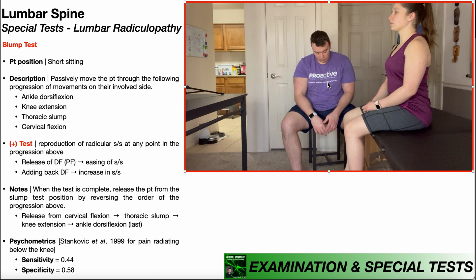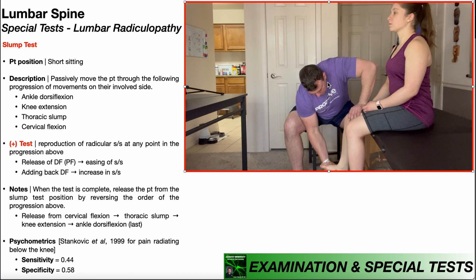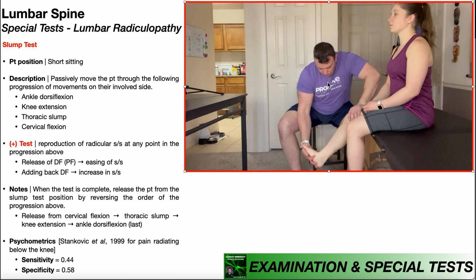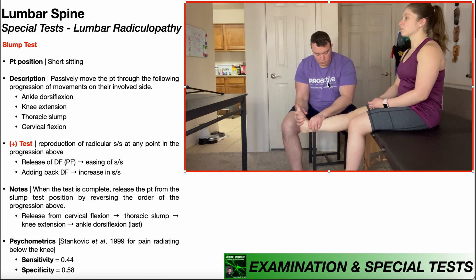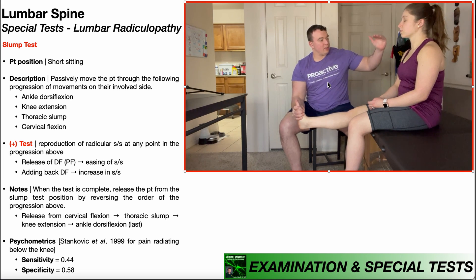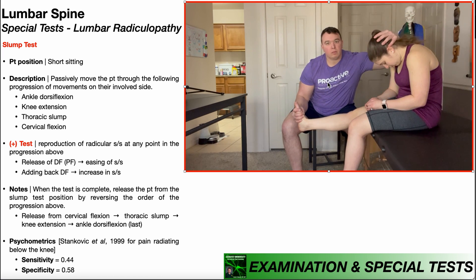I'll take her through those movements. First, I'm going to put her into ankle dorsiflexion. From there, we move into knee extension. After that, I'll have her slump at the thoracic spine — rounding her shoulders forward to get a little more kyphosis at the T-spine. Then I'm going to passively put her into cervical flexion. She can actively do that, but if at the end of active cervical flexion she still has no symptoms, I'll confirm with a little overpressure passively.